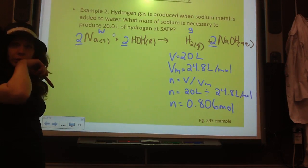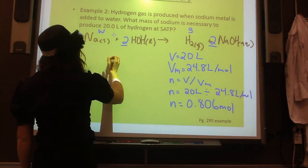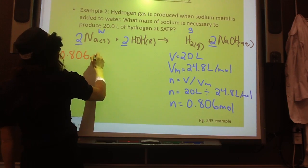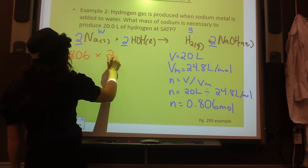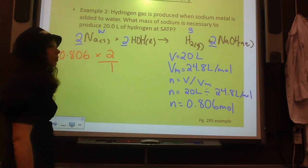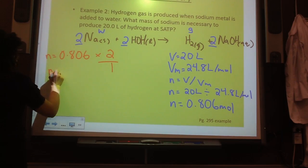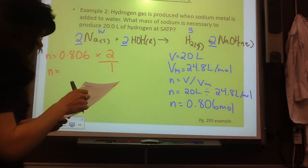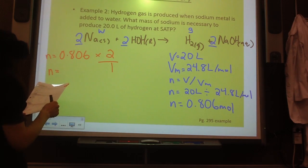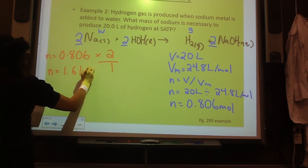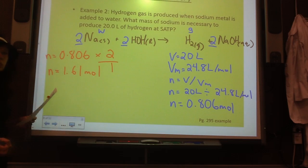Now you can do your molar ratio. So we take our 0.806, multiply by wanted over given. So I get 1.61 moles. Are you following me? Are we doing good so far?